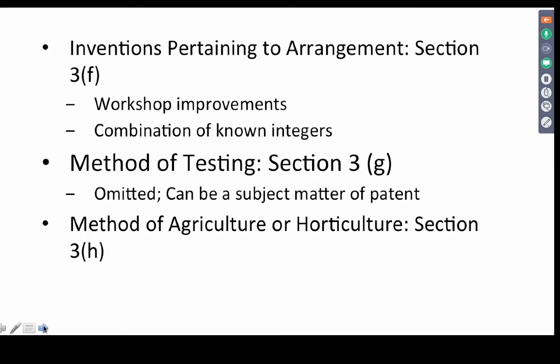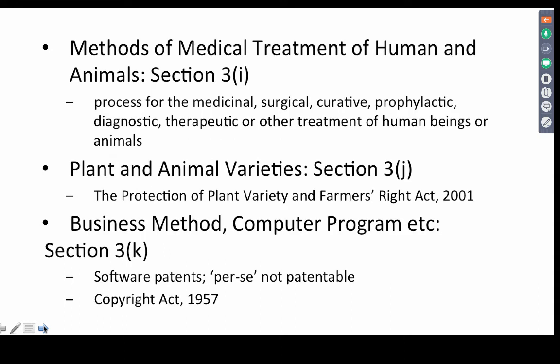A method of agriculture or horticulture cannot be patented. A method of treatment of humans and animals is also exempted — section 3(i) prohibits it. For plant varieties, we have a separate act under intellectual property rights laws called the Protection of Plant Varieties and Farmers' Rights Act 2001. Animal varieties are not patentable, and we do not give gene patents in India.